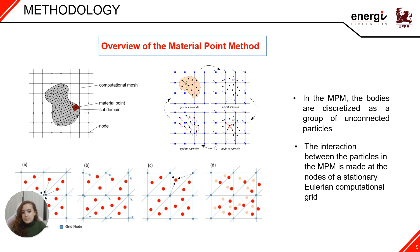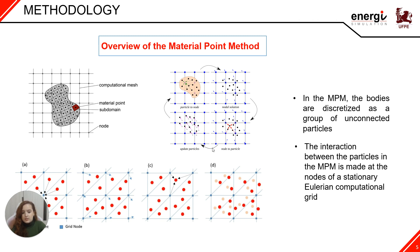In this method, the bodies are discretized as a group of unconnected particles, which carry a mass whose value is kept fixed to guarantee the conservation of mass, and the other parameters necessary to define the state of the body, such as stress, density, and history variables are also associated with the material points. The interaction between the particles in the MPM is made at the nodes of a computational grid, which remains constant for the entire calculation, thus eliminating the distortion problems.